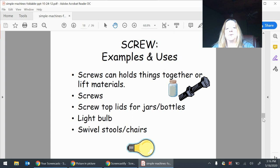Here are some examples. Screws can hold things together or lift materials. Screws, screw top lid, lids for jars, bottles, light bulb, swivel stools, and chairs.